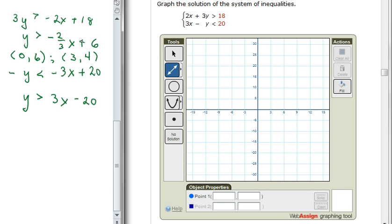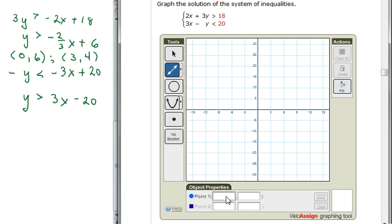So let me type these in. The ordered pair 0, 6, and the ordered pair 3, 4. So there is our first line. And this time the boundary is not going to be included, so I'm going to select dash there.